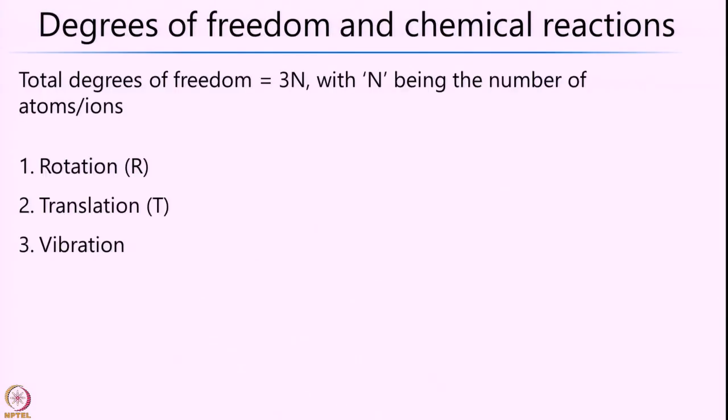In order to do that, we need to understand what are called degrees of freedom and their relationship with chemical reactions. If I take a system which has n different atoms or ions and look at the different degrees of freedom, you will agree that the degrees of freedom are given by 3n. The 3 comes from the three axes along which the system can freely undergo rotation, translation, or vibration — the X, Y, and Z directions. So any general system has 3n degrees of freedom, where n is the number of atoms or ions constituting the system.